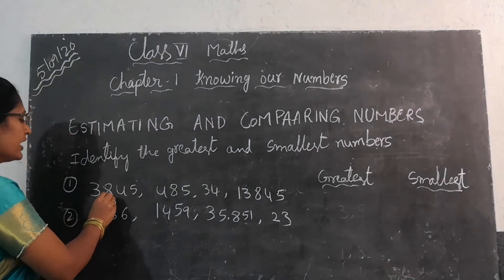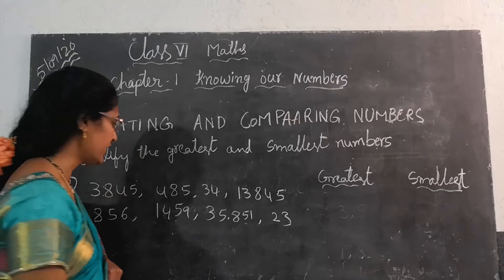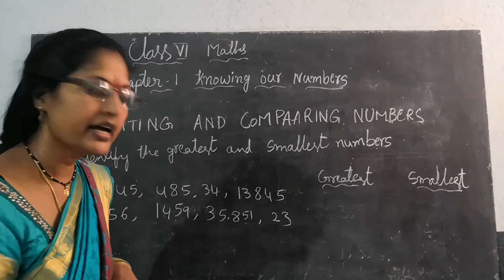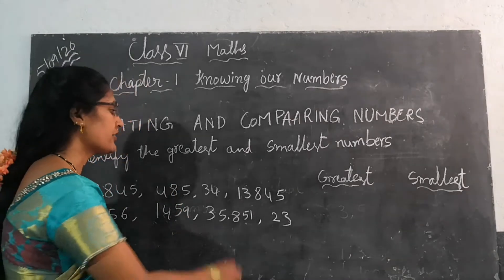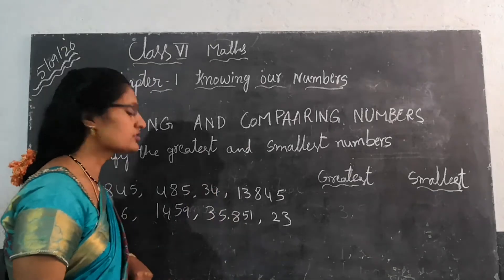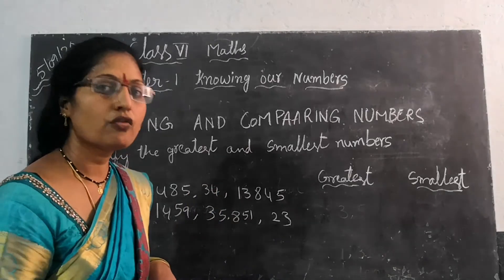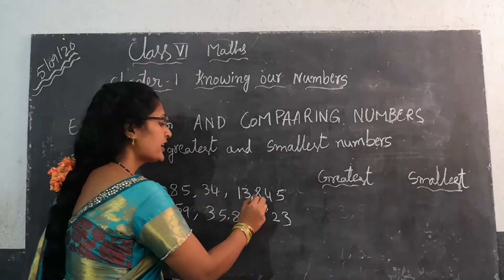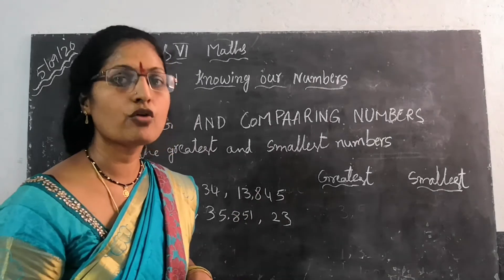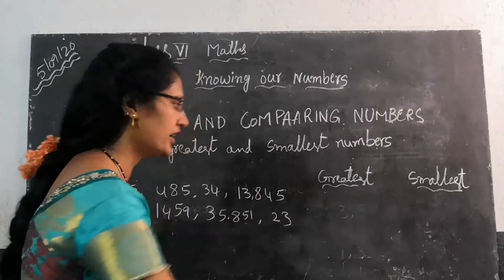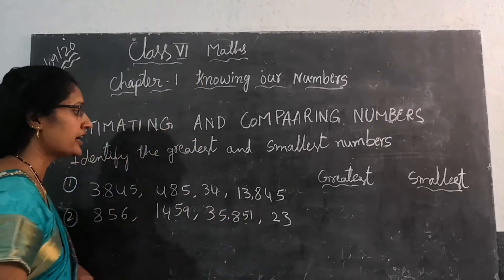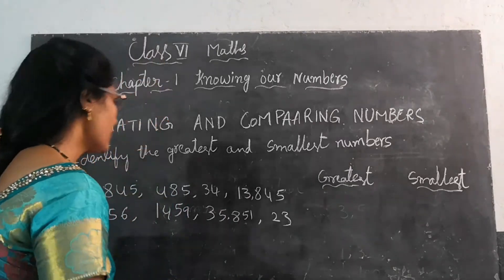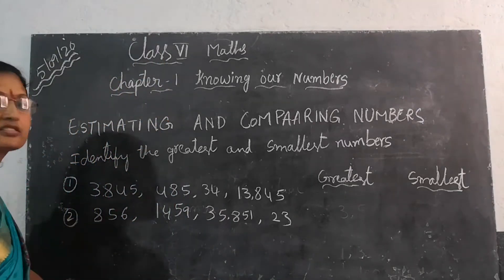3,845. The second one is 485. The third one is 34. This one is 13,845. In this row, you will find which is the greatest number and which is the smallest number.